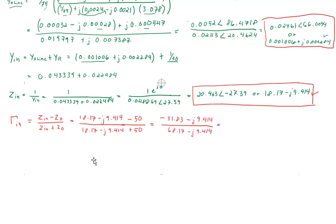We need to convert numerator and denominator to polar form. The numerator has both components negative, so it's in the third quadrant — take inverse tangent and add 180 degrees. The denominator has negative imaginary and positive real, so it's in the fourth quadrant — take inverse tangent and add 360 degrees. Dividing magnitudes and subtracting angles gives Gamma_in.